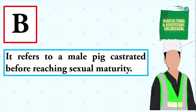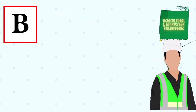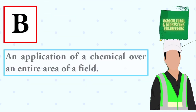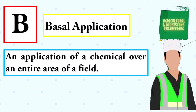It refers to a male pig castrated before reaching sexual maturity. The answer is: barrow. A diet common to all experimental animals to which the experimental substance is added. The answer is: basal diet. An application of a chemical over an entire area of a field. The answer is: basal application.